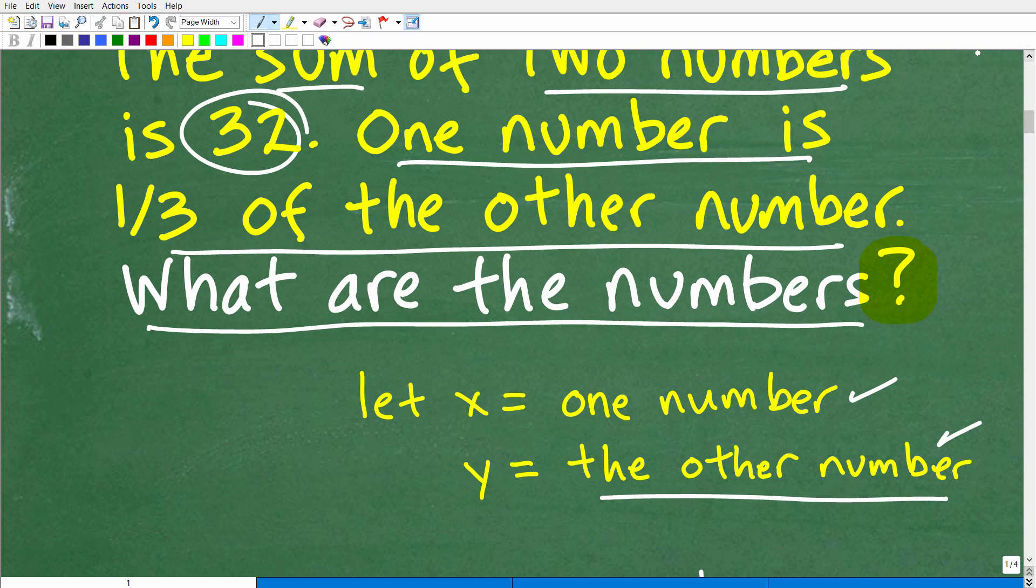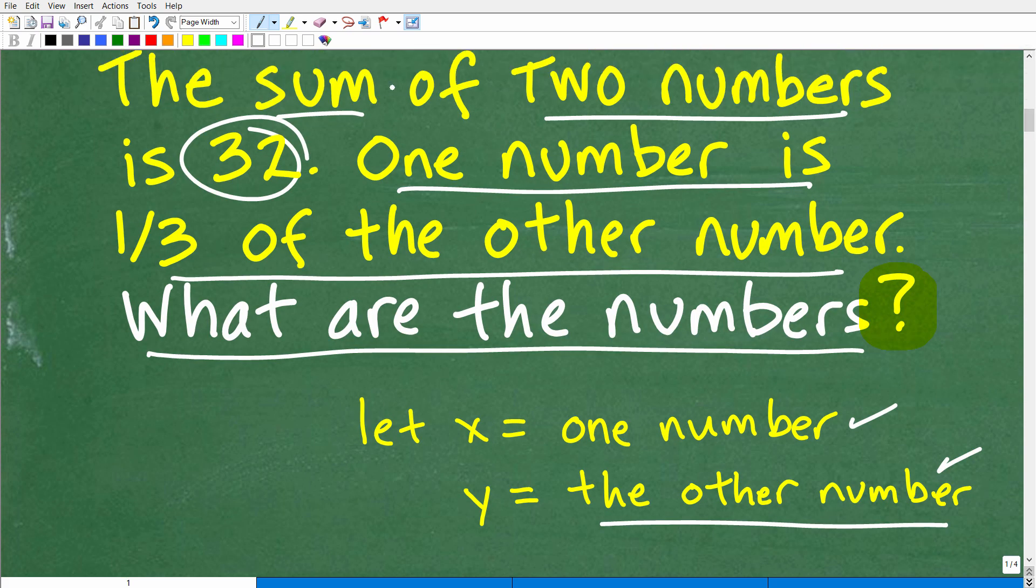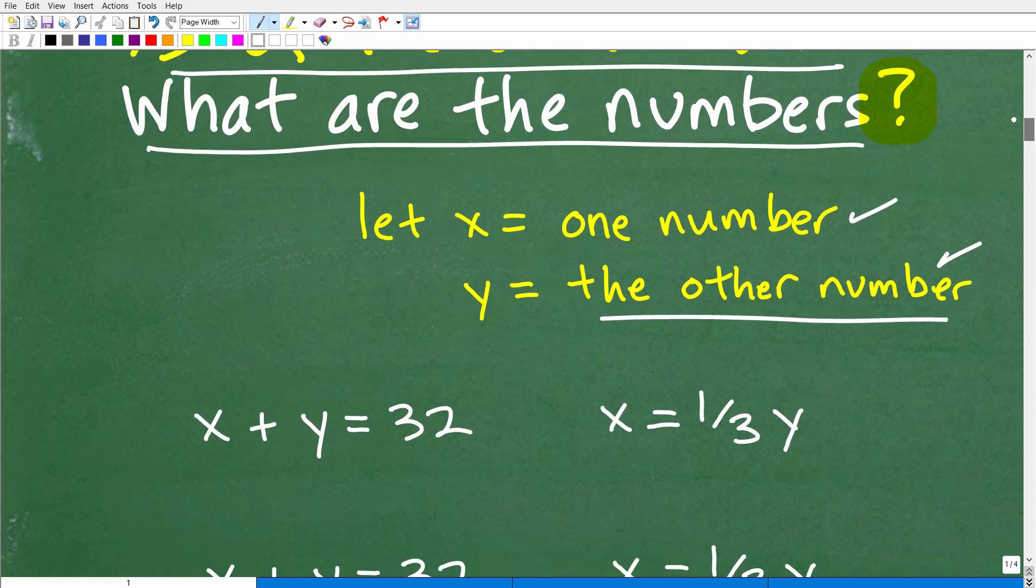So we have X being one number and Y being the other number. So we know that the sum, okay, this means what? When we add up those two numbers, the answer is 32. So let's build some equations now. So once you have variables, you've got to do something with those variables to figure out the answer, okay? So we have to use the rest of the information in the problem to construct some equations. So one equation we can construct is X plus Y is equal to 32, okay? The sum of these two numbers, when we add up these two numbers, we're going to get 32.